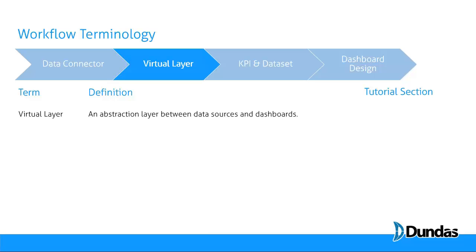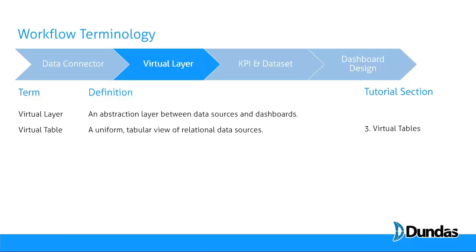The virtual layer is an abstraction layer between your data sources and dashboards. This is where you start narrowing down all of the data available in your data provider to what's going to be relevant for dashboard creation. These come in two different types: a virtual table, which you'll put on top of relational and flat file data sources (covered in Section 3), and virtual cubes, which go on top of OLAP providers, covered in Section 4.